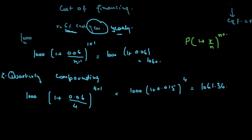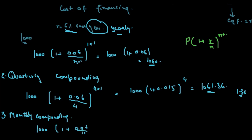In yearly compounding he was making 1060, and in quarterly compounding he is making 1061.36 — a higher profit of 1.36. Moving further, he could also ask for monthly compounding, and the formula would similarly give 1061.67 — a tad higher profit than quarterly compounding.